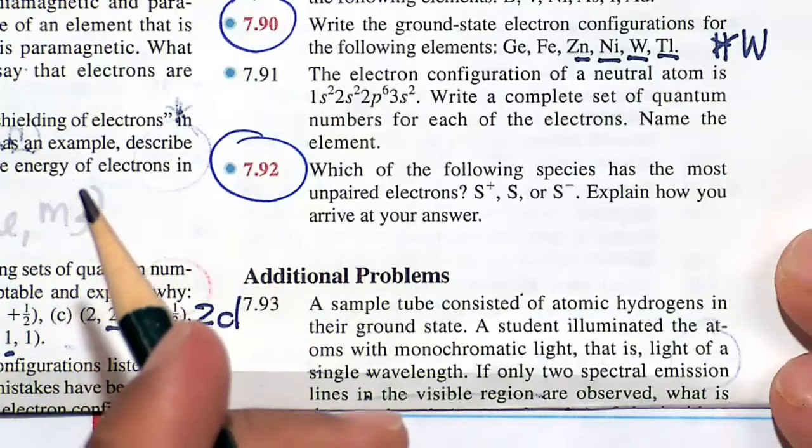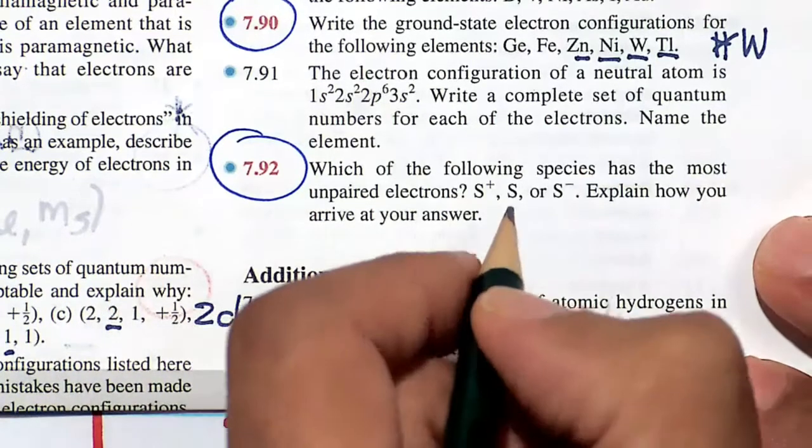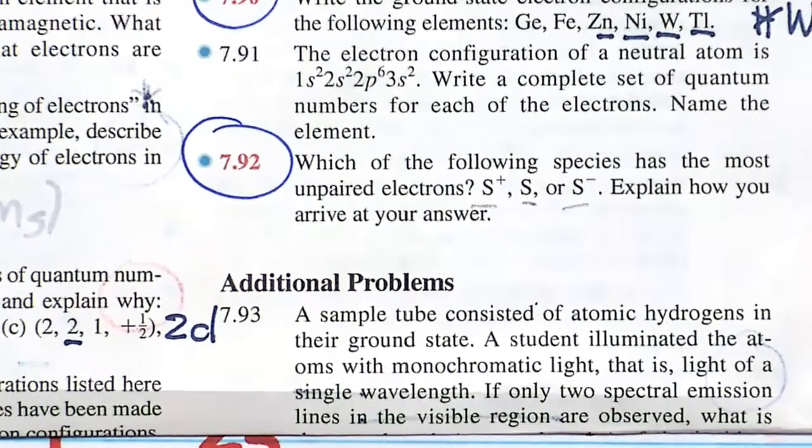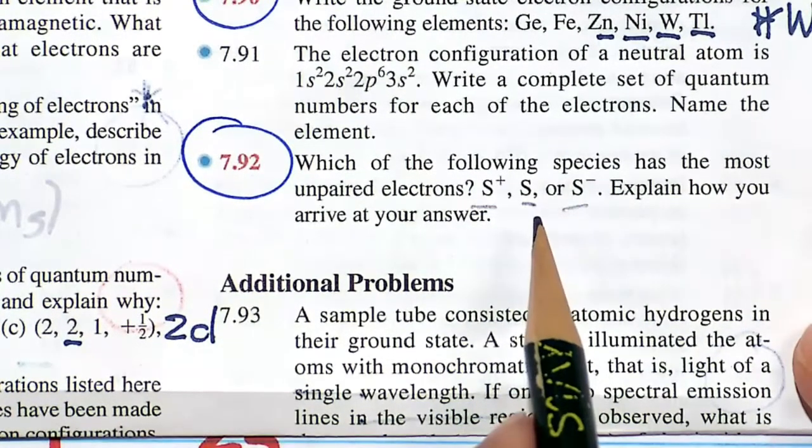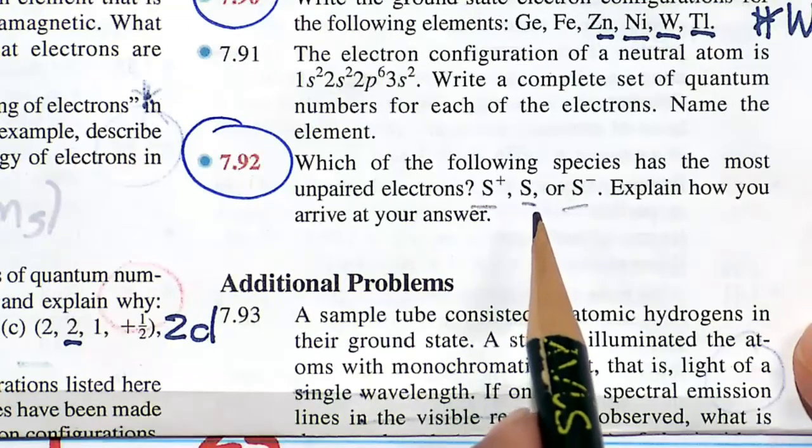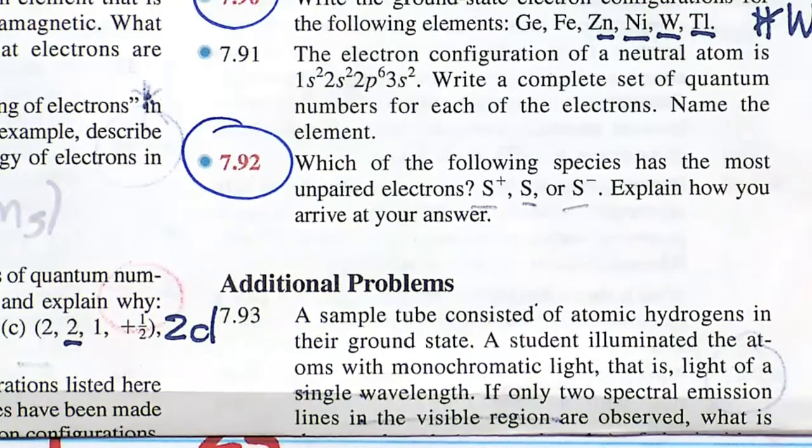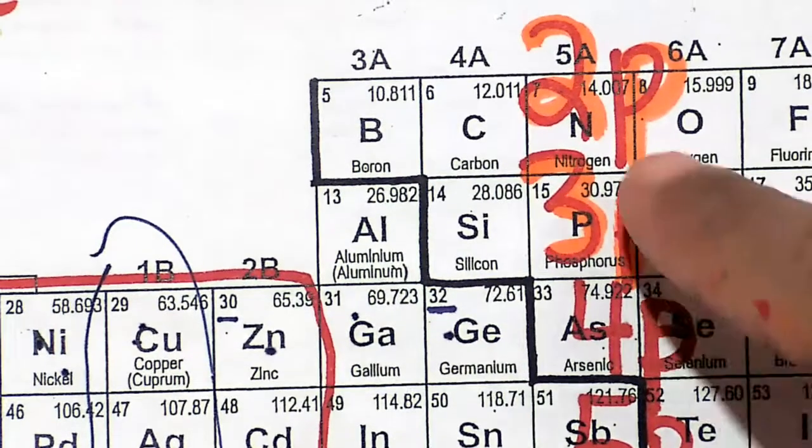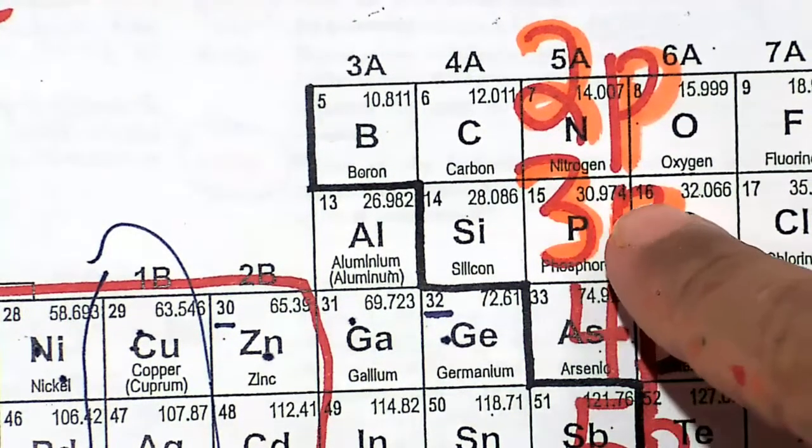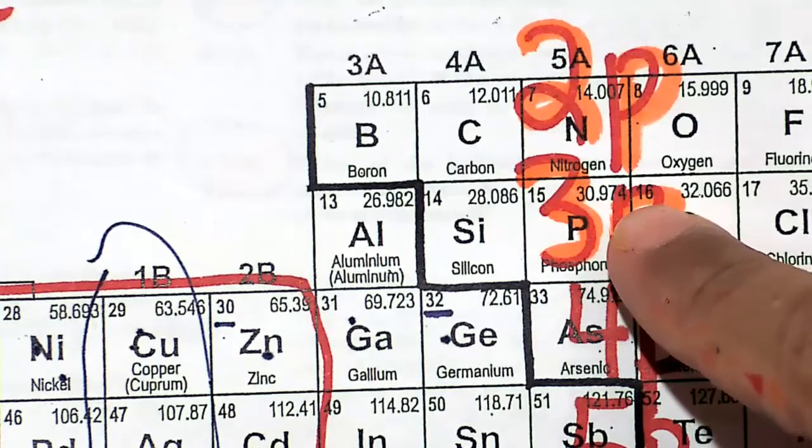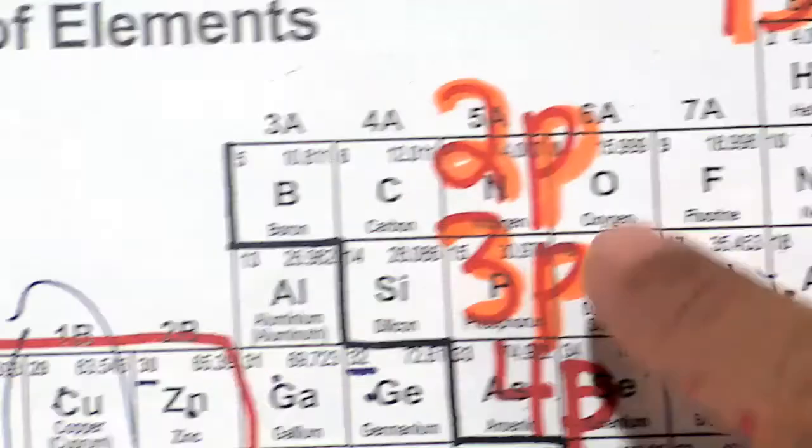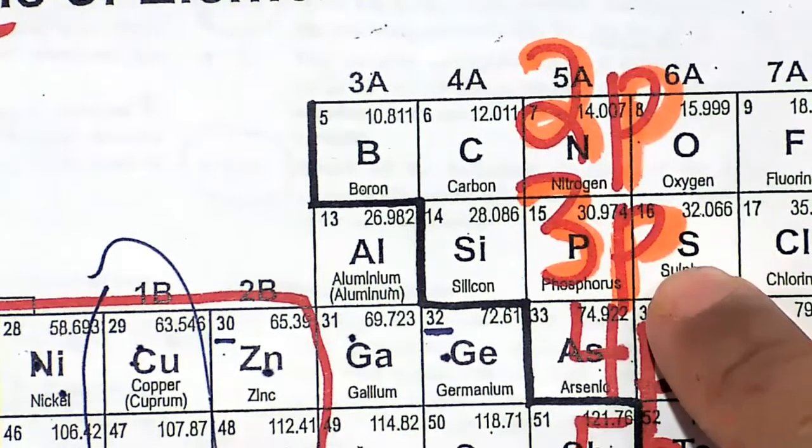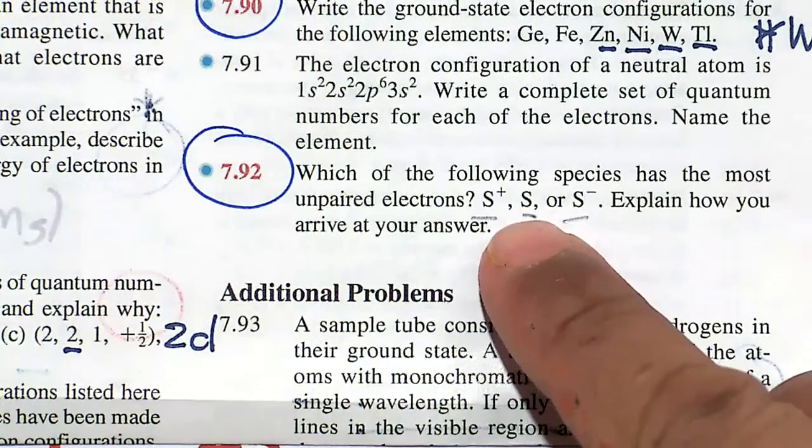In this video we will do the electron configuration of not just an element, but its corresponding ions. So for S, we can get the electron configuration of just how the electrons go in. How many electrons will go in for sulfur? It's going to be 16 electrons. They go in a specific order, so it's probably going to be neon 3s2, 3p4. That would be the electron configuration of sulfur.